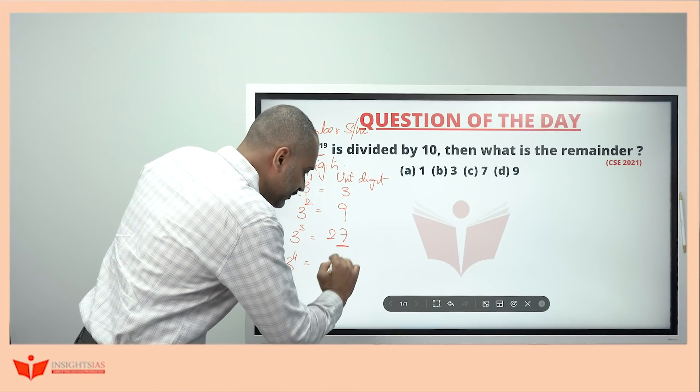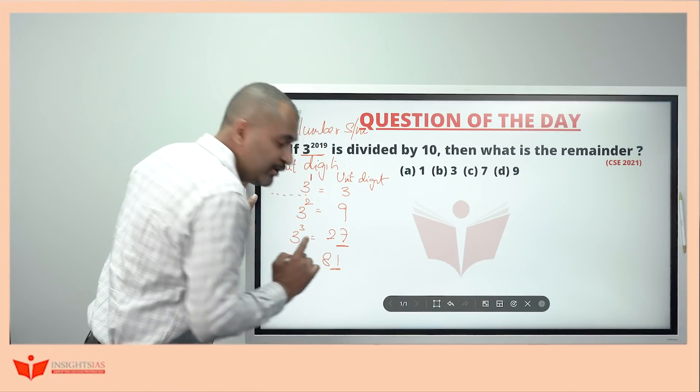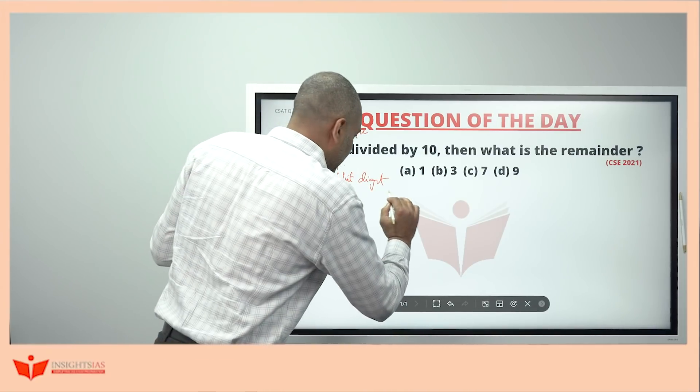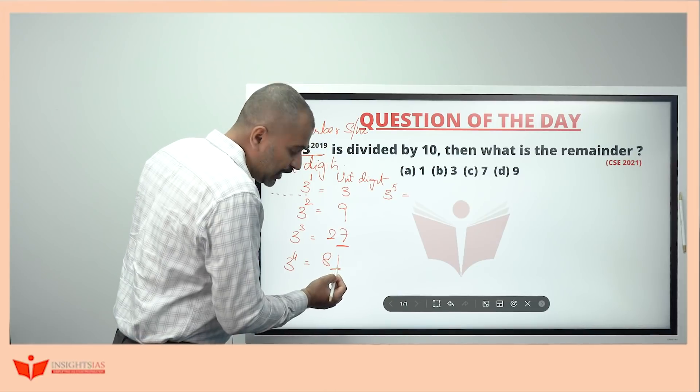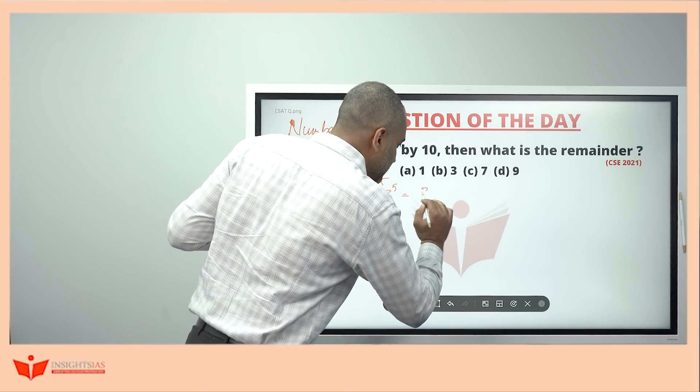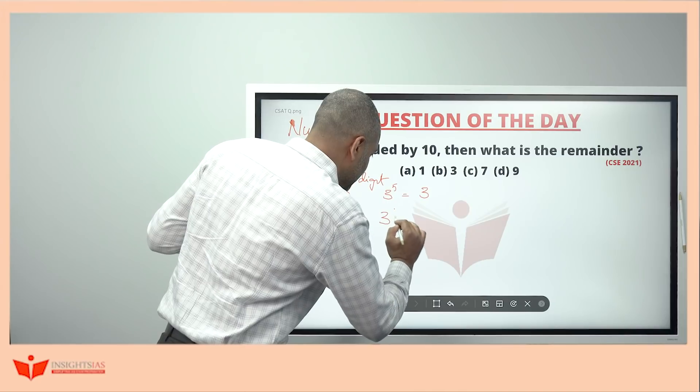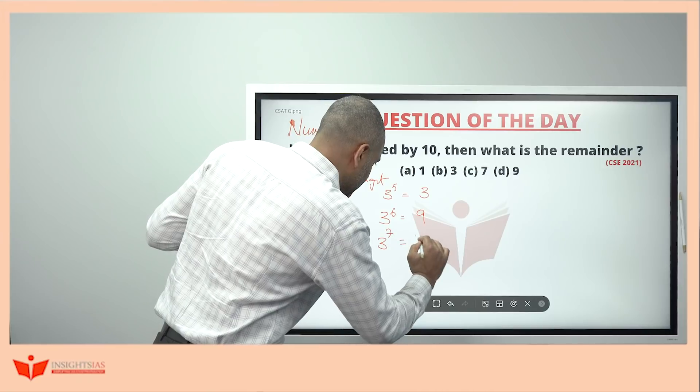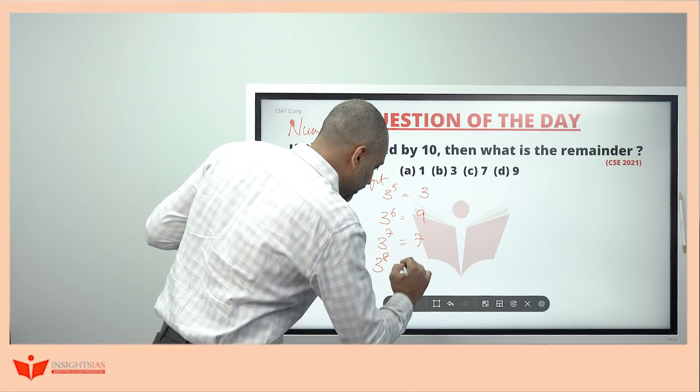3 power 4, similarly, 81, we are concerned about unit digit hence 1. Similarly, 3 power 5, if you do, unit digit is 1. Again, if it is multiplied by 3, the unit digit what we get here is 3. 3 power 6, unit digit is 9. 3 power 7, unit digit is 7. 3 power 8, unit digit is 1.